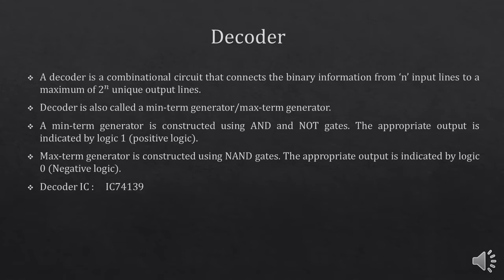A decoder is also known as a minterm generator or a maxterm generator. A minterm generator is constructed using AND and NOT gates. The appropriate output is indicated by logic 1 and it works on the positive logic. Whereas if we consider the maxterm generator, it is constructed using NAND gates, and the output is indicated by logic 0 — it works on the negative logic.